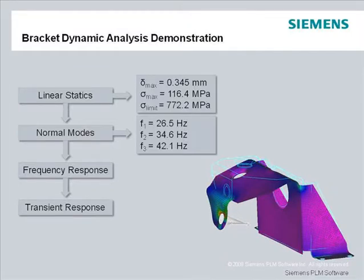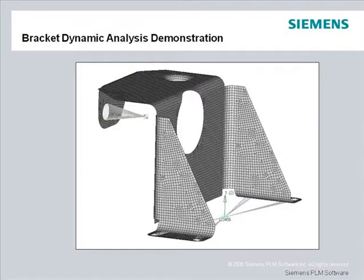This demo picks up from the previous linear statics and normal modes analyses and extends into an investigation of the dynamic behavior of the bracket model with the transient response analysis. The bracket model is a sheet metal structure that is fixed at the base and has an electric motor attached. The motor is modeled using a mass element representing the mass of the motor attached to a node positioned at the motor center of gravity. The motor CG node is linked to the bracket at the attachment hole with a spider of rigid elements.